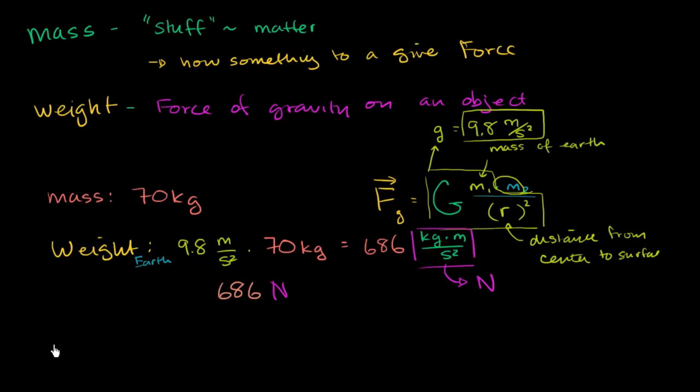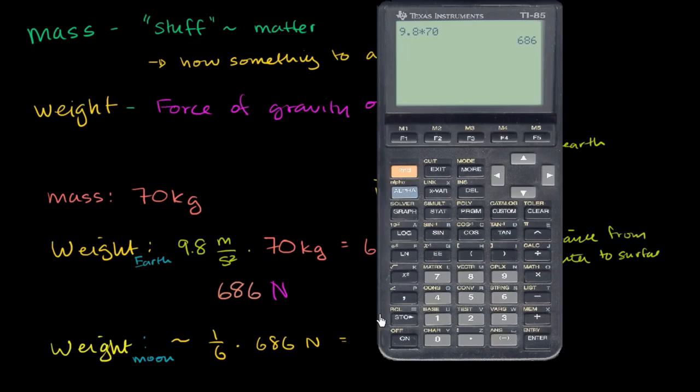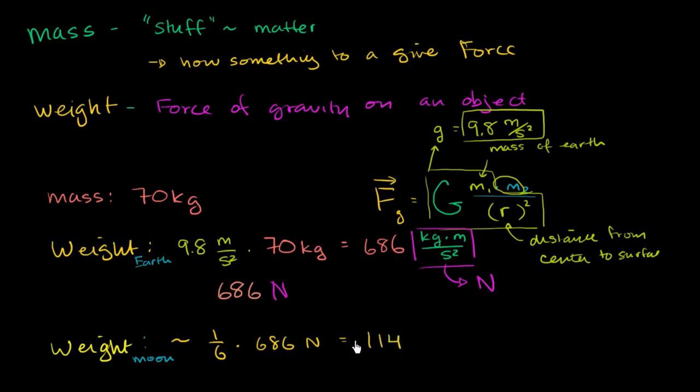If I were to take my weight on the moon, and I haven't looked this up before the video, and you can verify this for me if you like, but I've been told that the gravitational force on the moon, or the gravitational attraction at the surface of the moon, is about 1/6th that of the surface of the Earth. So my weight on the moon will be roughly 1/6th of my weight on the Earth, times 686 newtons. So that gives me approximately 114 newtons.